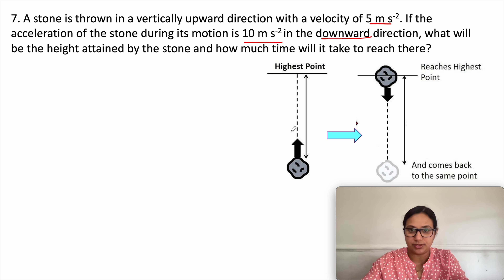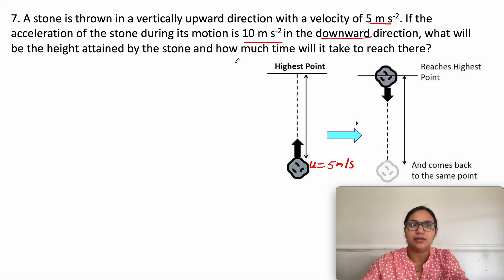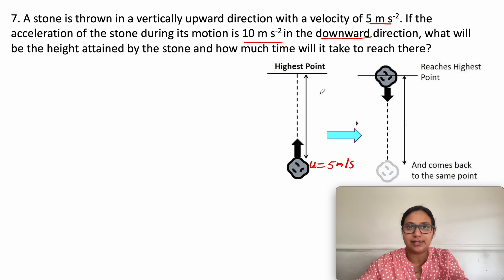The stone is in the vertically upward position, as you can see here. It has an initial velocity u = 5 meters per second, and the acceleration of the stone during its motion is 10 meters per second squared.